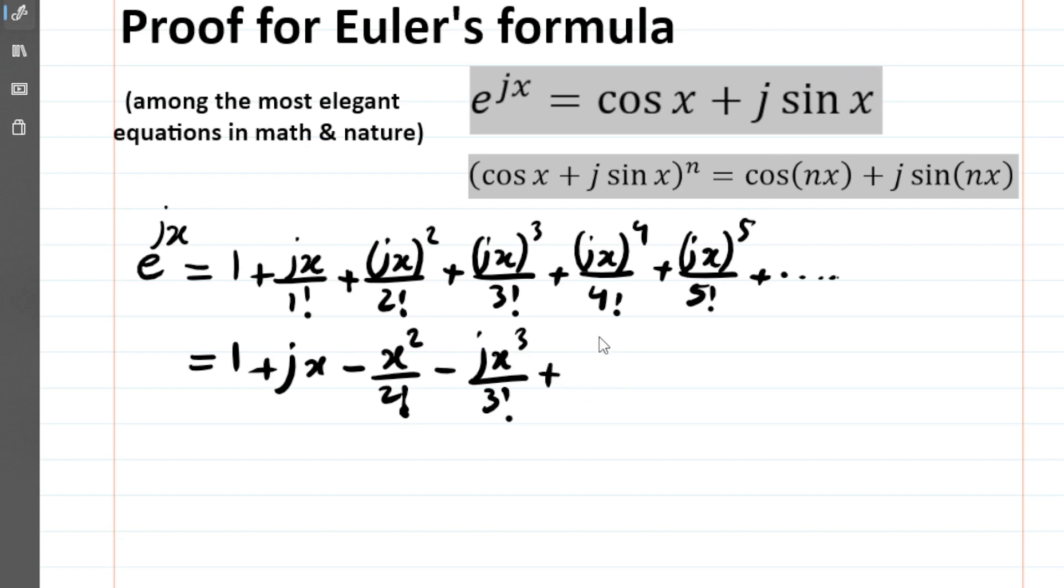So we get +x^4/4!, and finally +jx^5/5!, and this goes on forever.